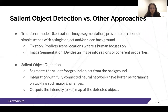There are some traditional and related methods such as fixation and image segmentation. Fixation predicts scene locations where a human focuses on, while image segmentation divides an image into regions of coherent properties. Those methods work well with a simple scene with a single object or a clean background. For salient object detection, it segments the salient foreground object from the background. Some approaches integrate salient object detection with fully connected neural networks and tend to have better performance on tackling major challenges.